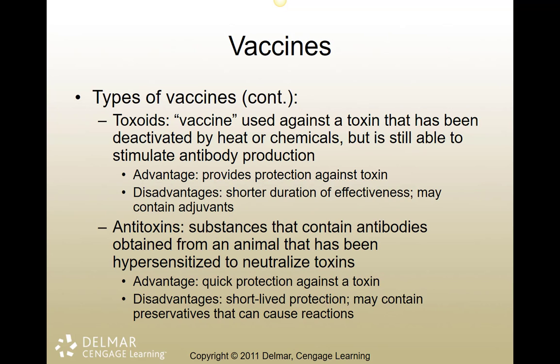Toxoids use parts of bacterial toxins or other environmental toxins to stimulate the immune system. The textbook notes short duration of effectiveness, but that is not accurate — tetanus is a toxoid and has a very long duration: in people with an initial dose and booster it works 20 years, and in horses it works 10 years. Toxoids do contain adjuvants that can cause reactions, but they're very effective against things like Clostridium tetani, Clostridium types B, C, and D in sheep and goats, and blackleg in cattle.